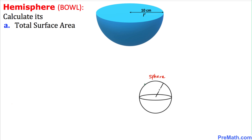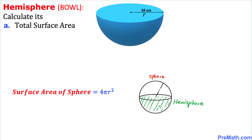Let's talk about the sphere. This rounded shape is a sphere and the surface area of a sphere is 4πr², where r is the radius. Here is the hemisphere — the shaded area — this is the half of the whole sphere, and therefore the surface area of this hemisphere is going to be half of that, meaning we divide by 2.